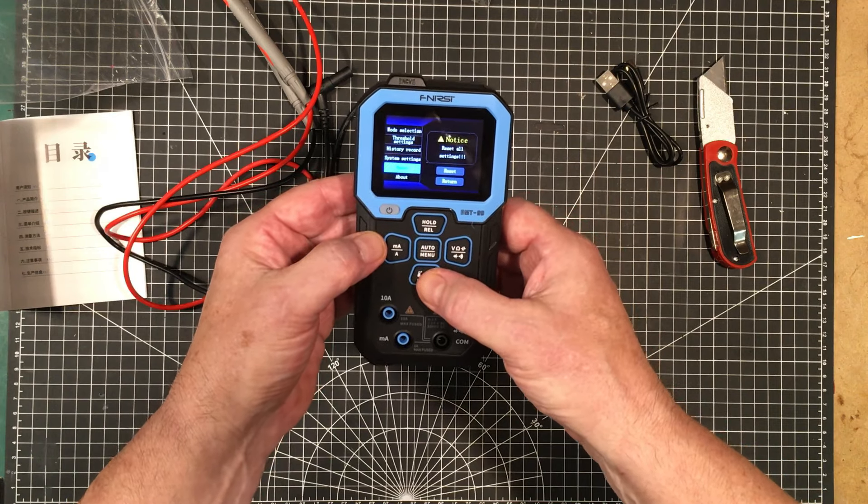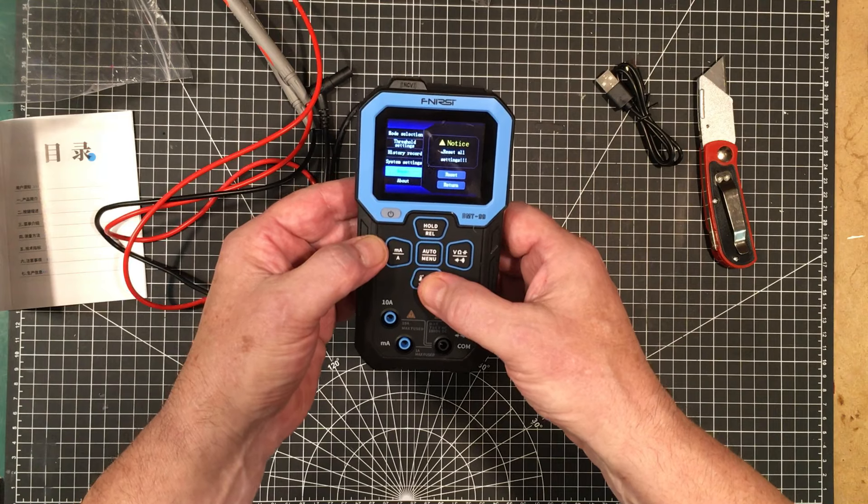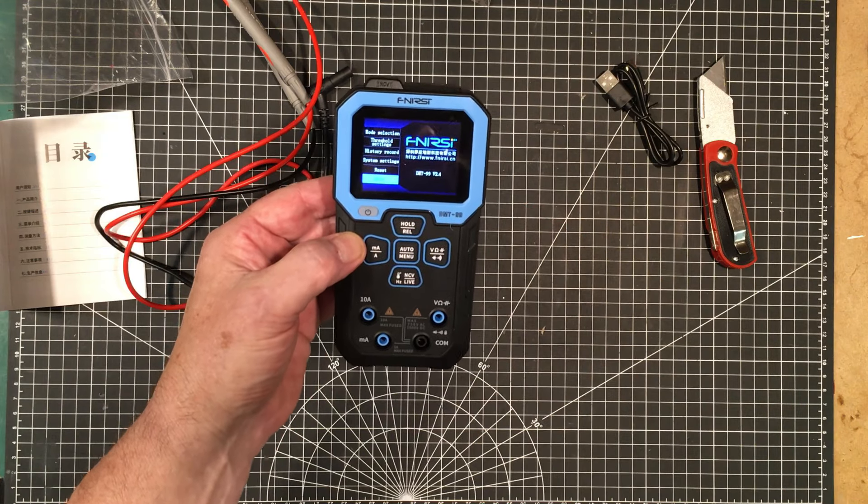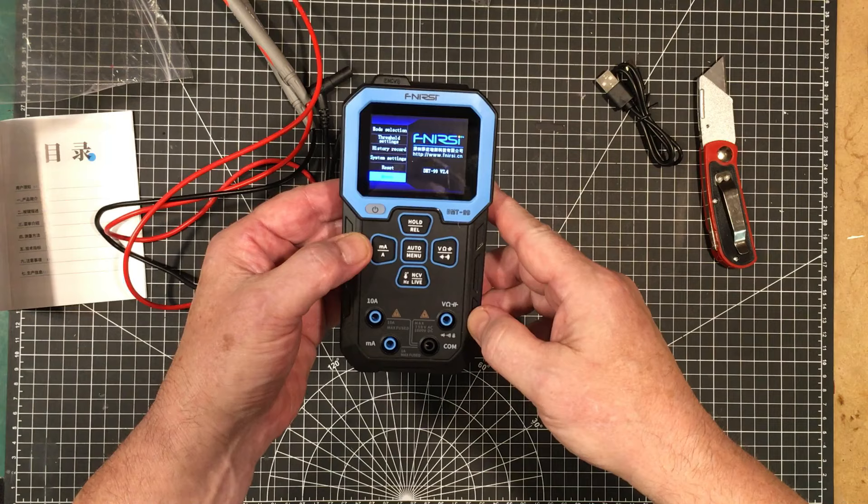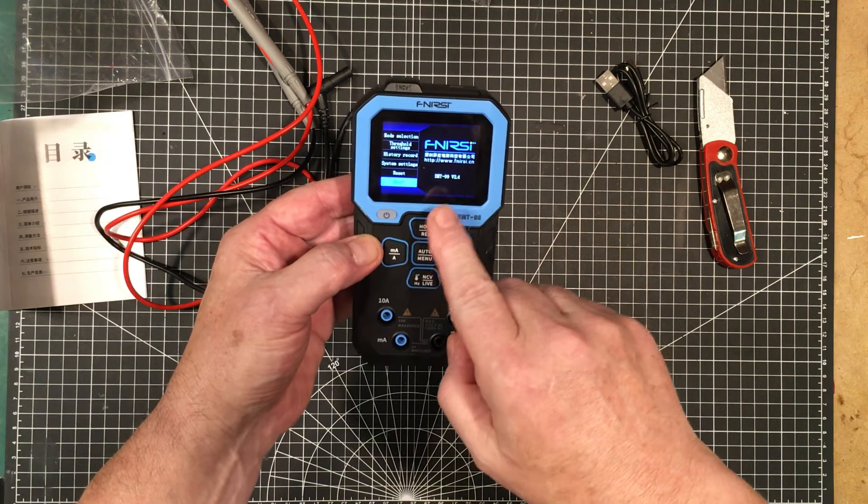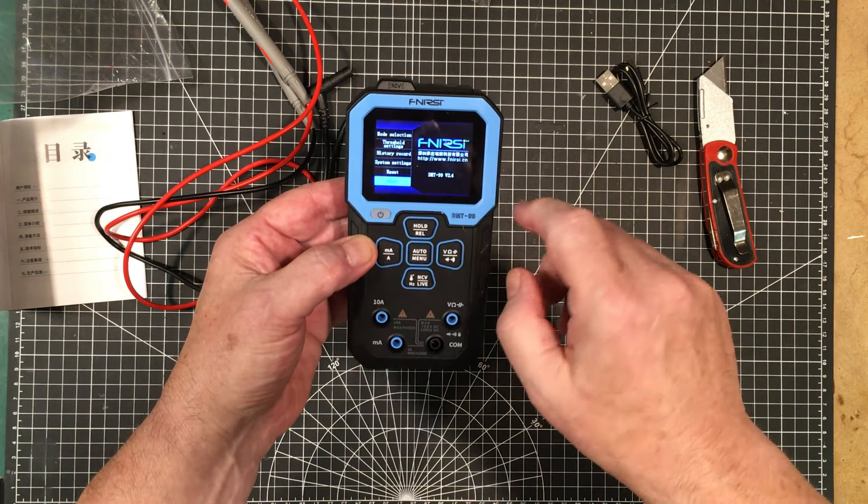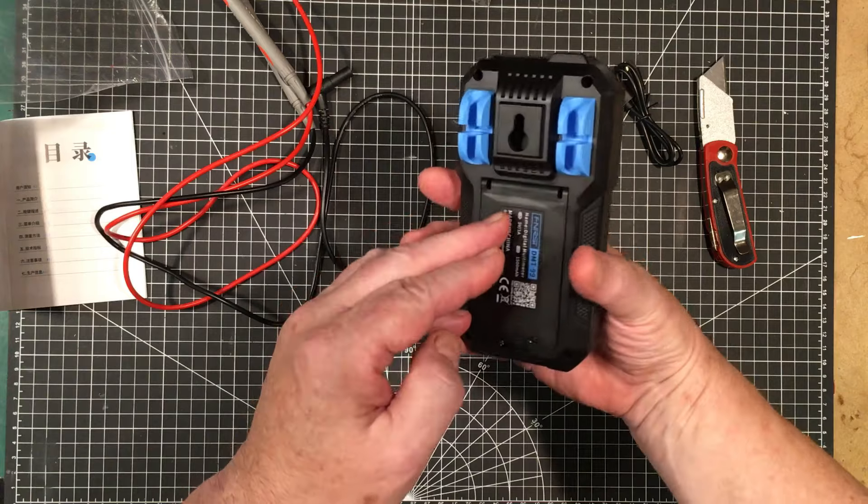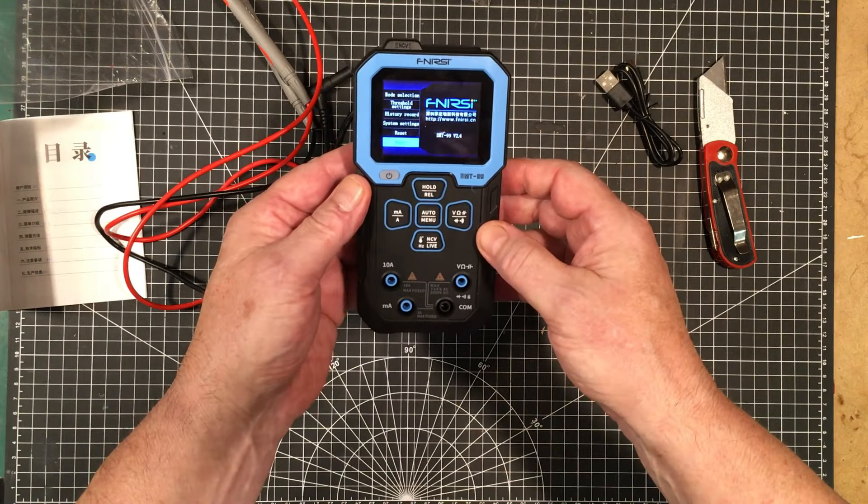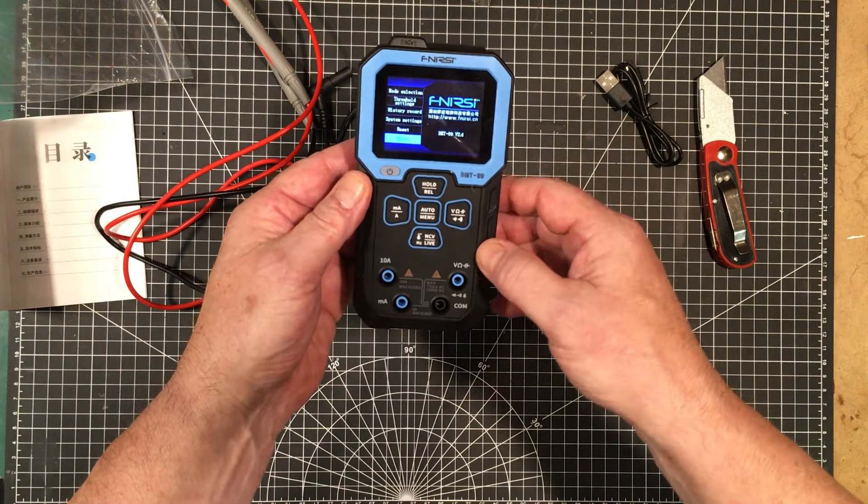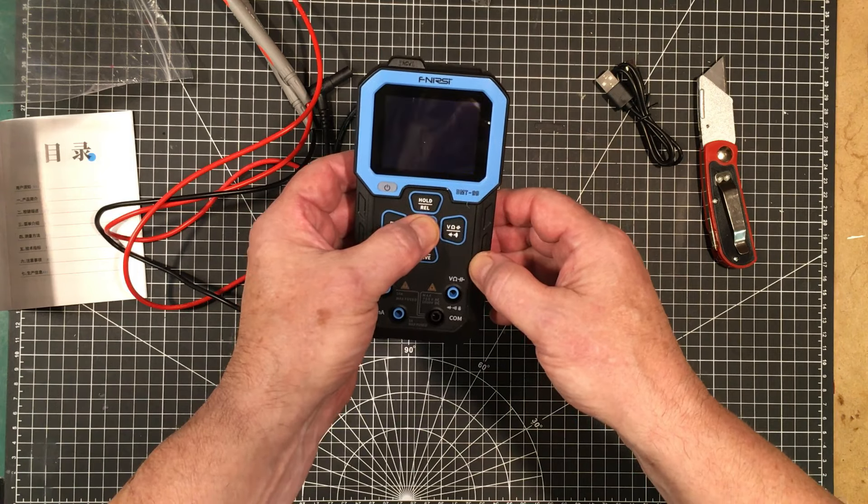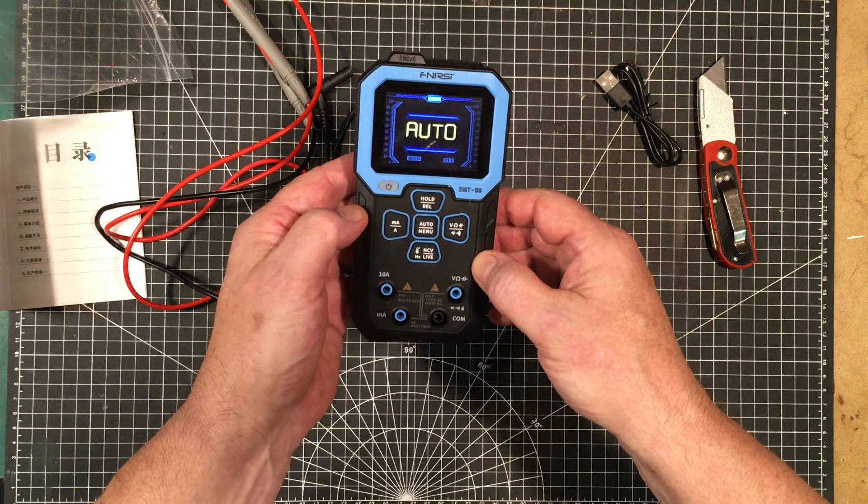And reset. Reset all settings. We don't want to do that right now. And about. So it's now DMT-99 version 2.4. I don't know if that's the firmware revision level or the hardware revision level, but it's some revision level. And we're back now to auto mode.